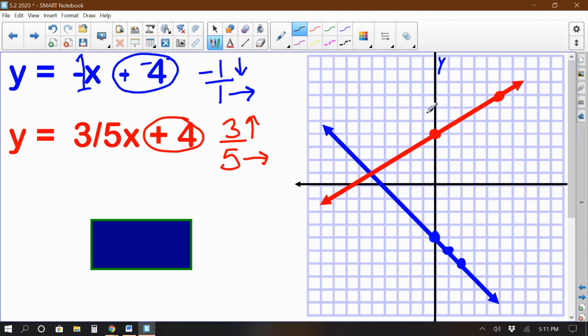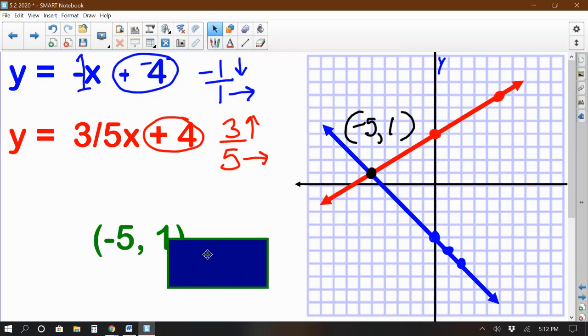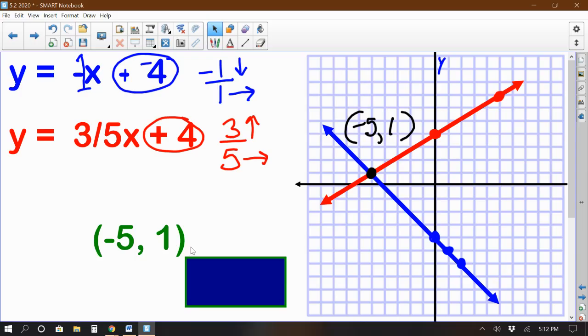All right. Next is to figure out where it looks like they're crossing. Well, here we go. The two lines seem to intersect right here. Now, what ordered pair is that? Can you figure it out before I get it? So it looks like I'm going to go 1, 2, 3, 4, 5 to the left. So that would be negative 5. And we go up 1. Negative 5, 1. Let's see if that's the correct solution to my system of equations. Yeah, there we go. Negative 5, 1.